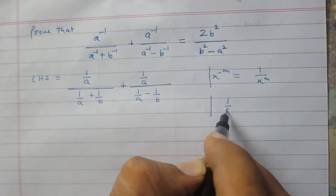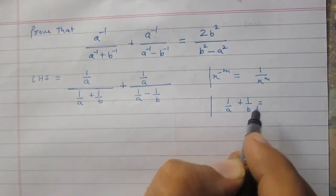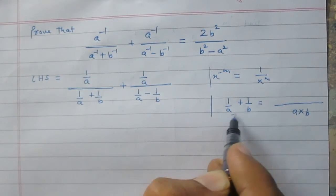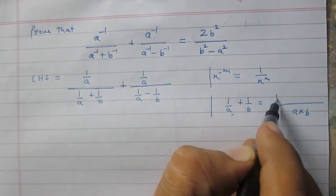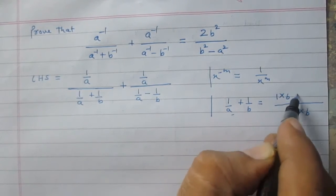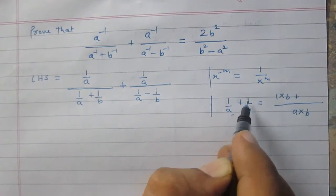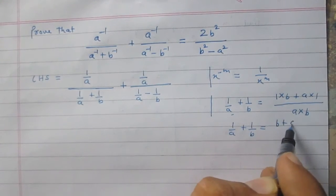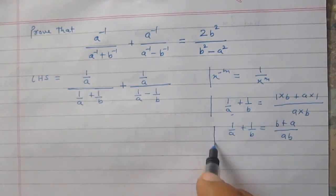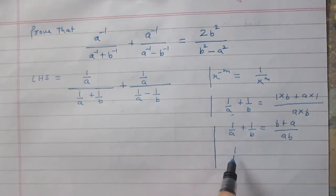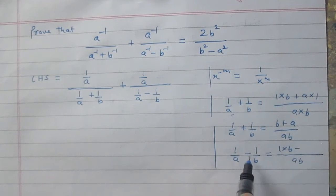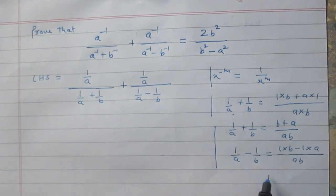Now consider 1 upon a plus 1 upon b. We can write it as b plus a divided by ab, since the denominator is the product of both denominators and the numerator is 1 times b plus a times 1. Similarly, 1 upon a minus 1 upon b equals b minus a upon ab.